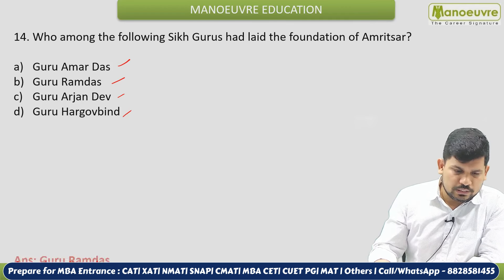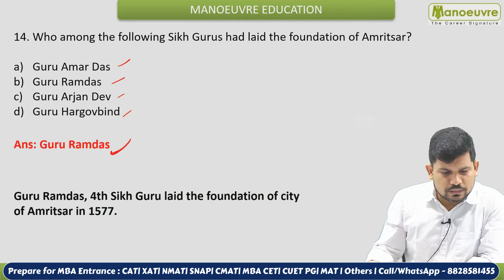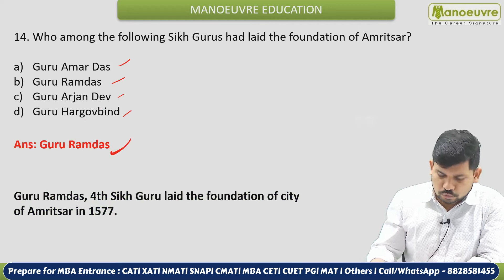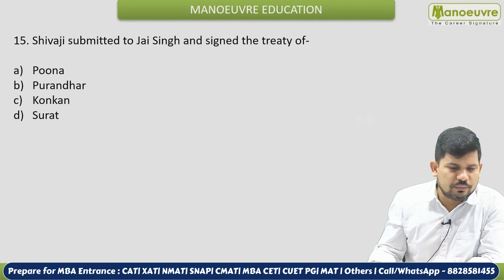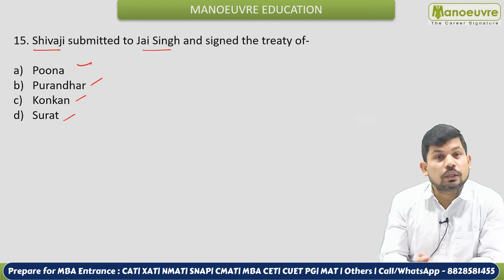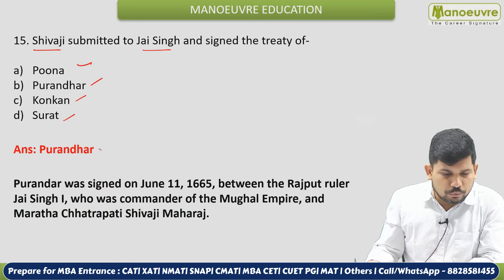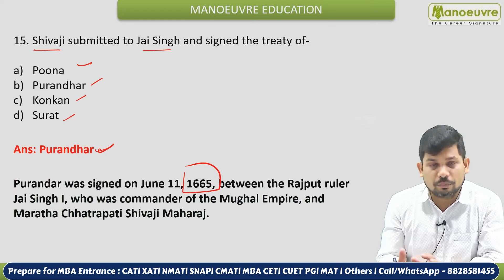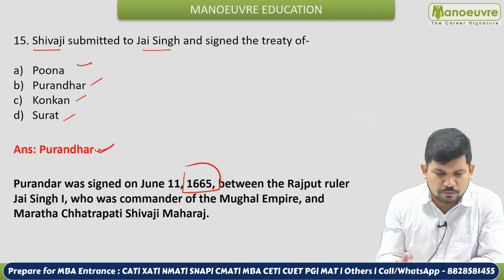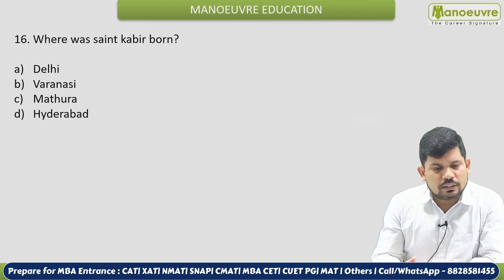The correct answer related to Sikhism is Guru Ramdas. Next: Shivaji submitted to Jai Singh and signed the Treaty of — Pune, Purandar, Konkan, or Surat? The correct answer is Purandar. The Treaty of Purandar is very famous — remember 1665. It is a very important treaty.